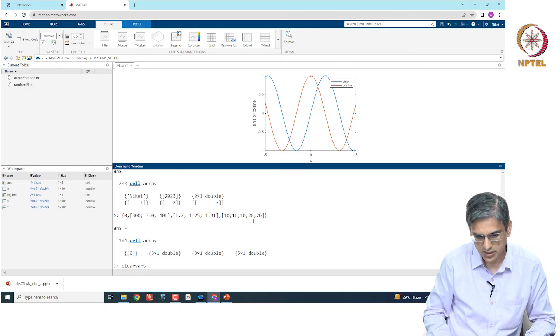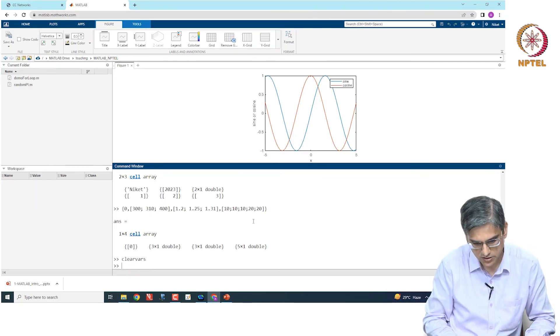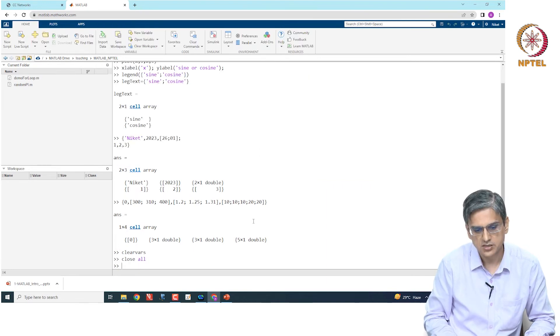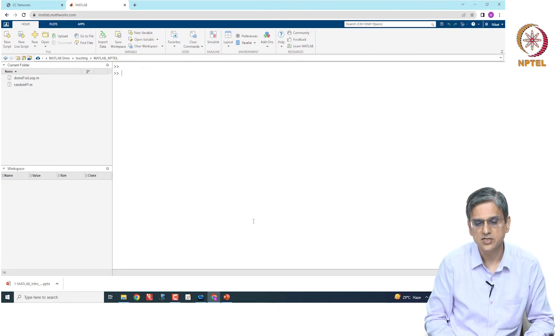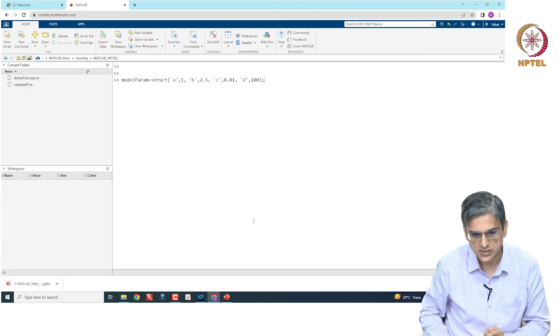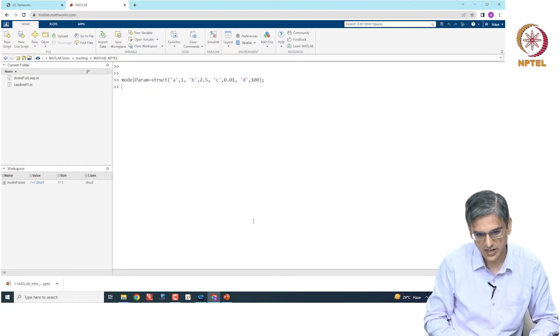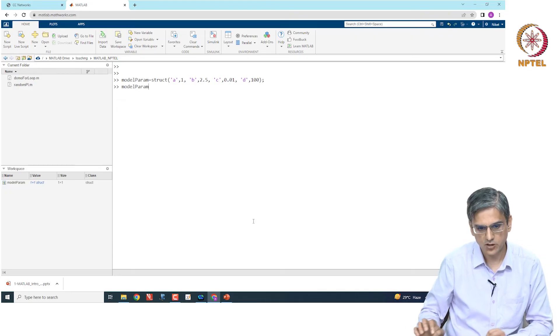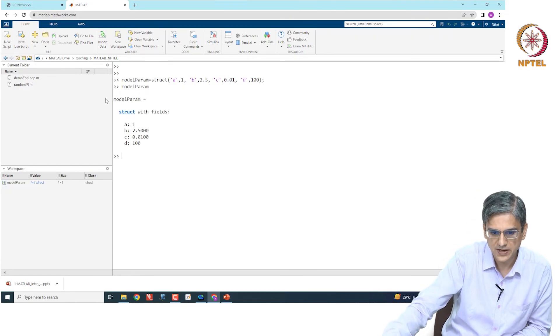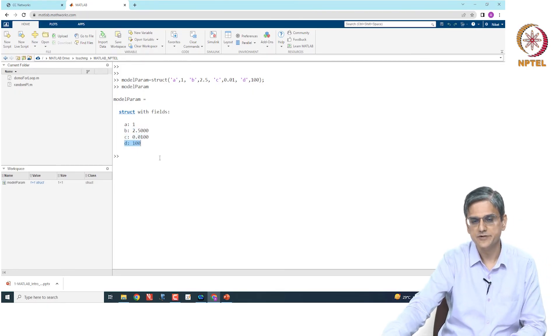I am using the command clearvars to clear all the variables, close all to close all the figures, clc to clear the screen. Let me copy paste this over here. And you will have a structure called model param. If I type model param, model param is struck with this field, where a equal to 1, b equal to 2.5, c equal to 0.1, and d equal to 100.